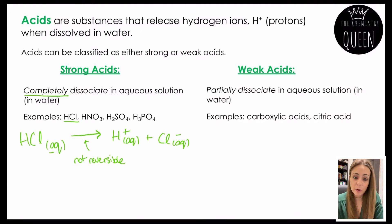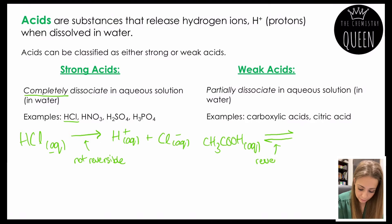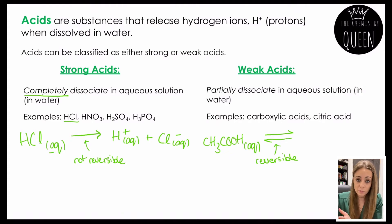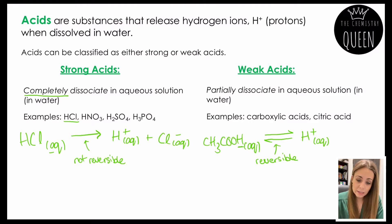Weak acids are different — they only partially dissociate, and I'm going to use ethanoic acid to demonstrate this. Again we use the state symbol AQ to show it's dissolved in water. The arrow drawn shows this is a reversible reaction, meaning once the acid molecule has dissociated, the products can rejoin to reform the acid. Not all of the ethanoic acid molecules will dissociate. It dissociates to form H+ ions — it's the hydrogen attached to the oxygen that is released — leaving the negative ion CH3COO−.